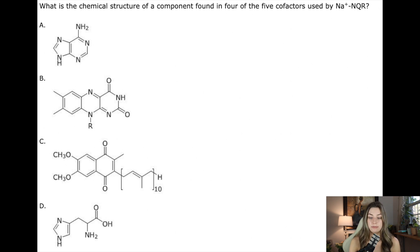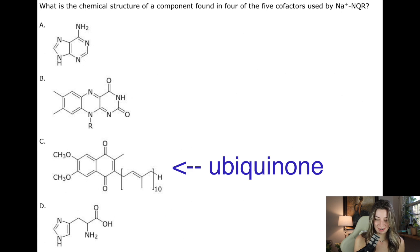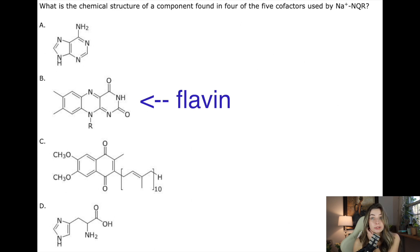Number six says, what is the chemical structure of a component found in four of the five cofactors used by the oxidoreductase? So it's probably talking about flavin because we had the note that flavin was in four of the five cofactors. So this question's asking like, what is the chemical structure of a flavin? So if you don't know this, I'm guessing I would put it on a card. This is not something that I would have predicted that you need to know. But I'm guessing you do. This is adenine. I know that. And then you should know this is histidine, which is an amino acid. And I just looked this up and it's ubiquinone and this is flavin. You can definitely mark out like A and D because you should know definitely what those look like.